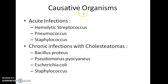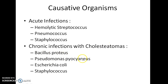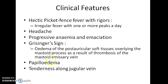The causative organisms in cases of acute infections include hemolytic streptococcus, pneumococcus, and staphylococcus. In cases of chronic infections of the middle ear with cholesteatomas, Bacillus proteus, Pseudomonas pyocyaneus, Escherichia coli, and staphylococcus are the most important causative organisms.